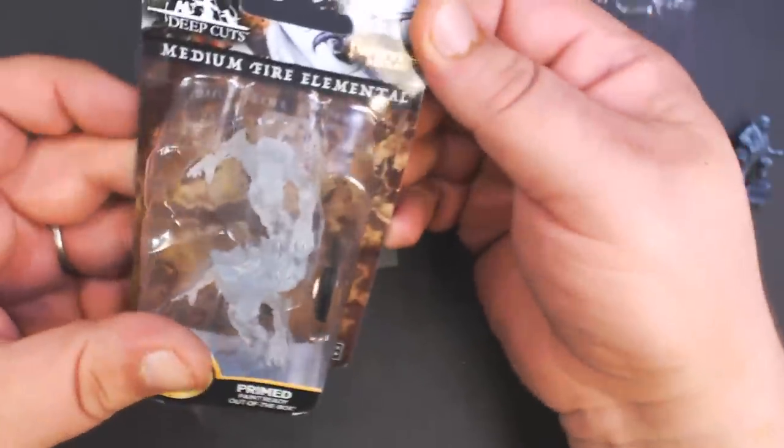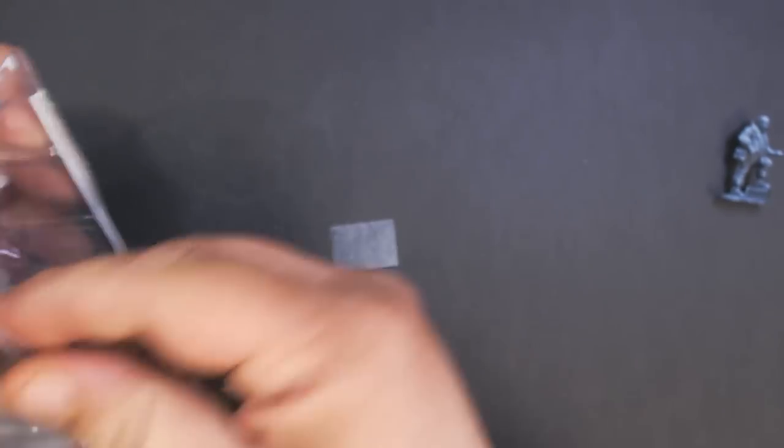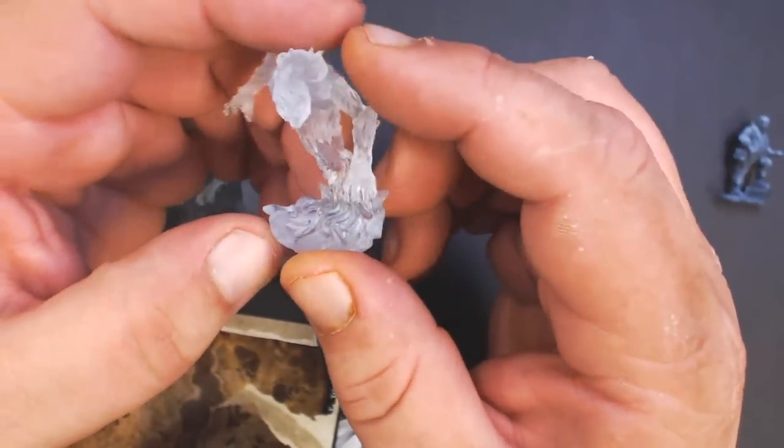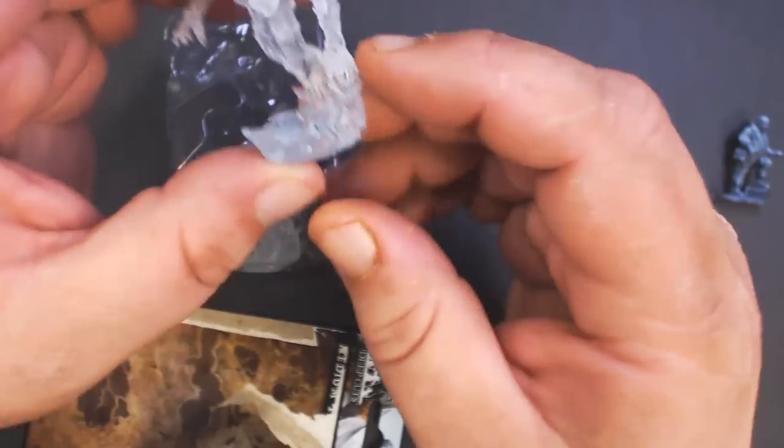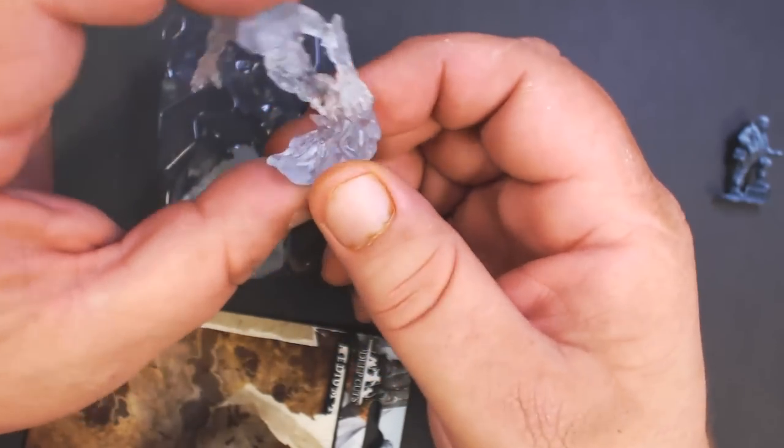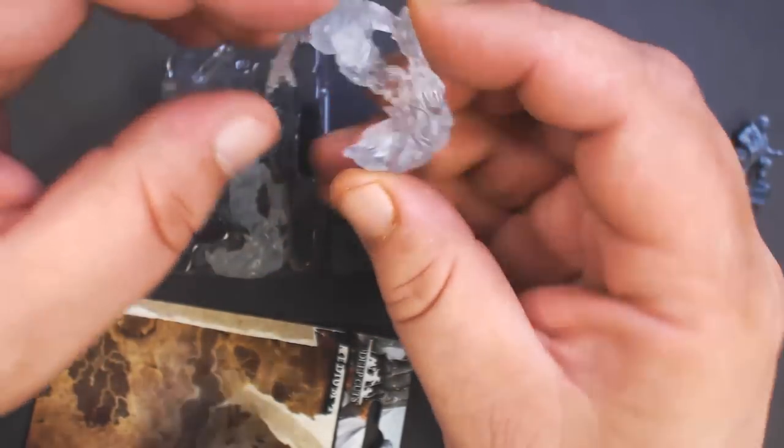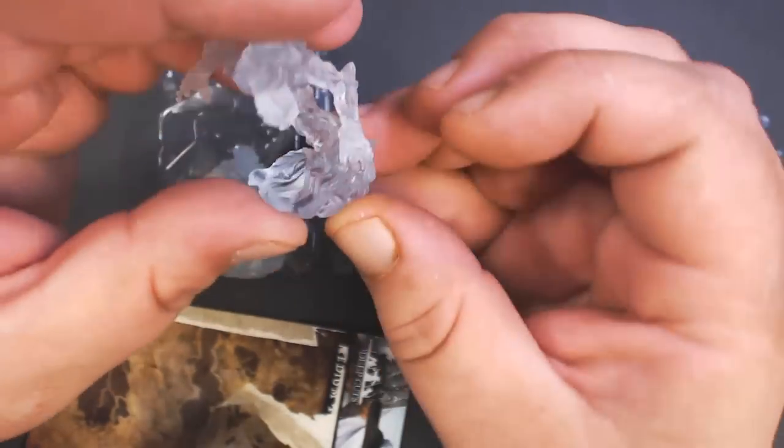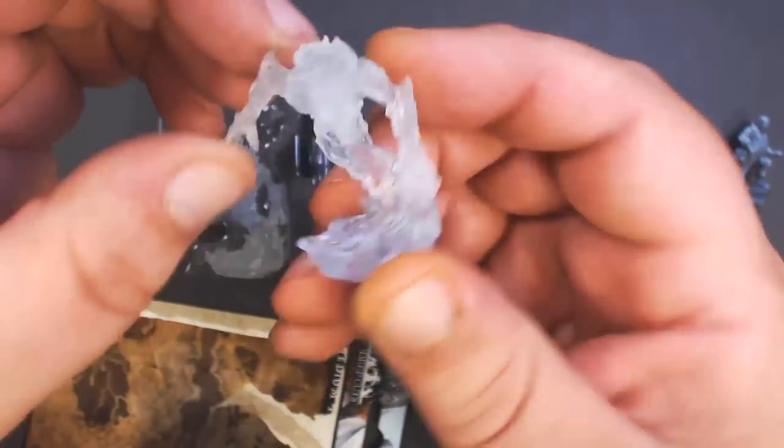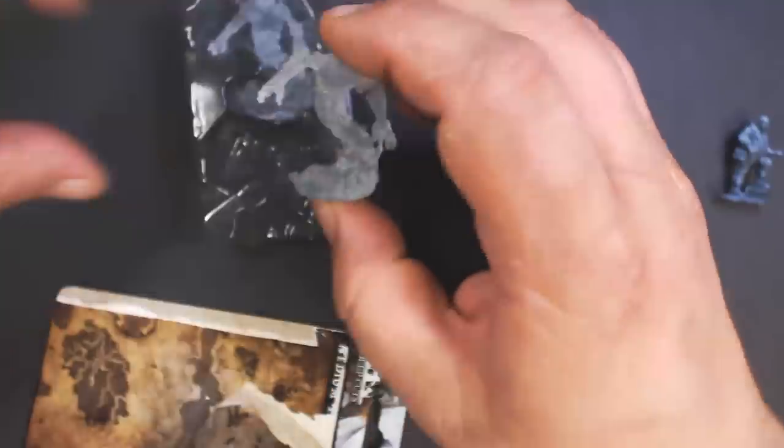Then we've got the fire elementals. These are completely transparent, so you can paint them and maybe if you wanted to put a light under them in the base—like a little tea light LED—you could use transparent paints and it would glow pretty well. I might try to do that in a future video. Probably hard to see too much detail on these since they're clear, but they look pretty cool. Look a little more humanoid than typical fire elementals, so that's cool.